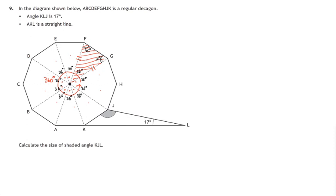this will be x degrees, and I'll have 36 degrees plus two lots of x degrees being 180 degrees.